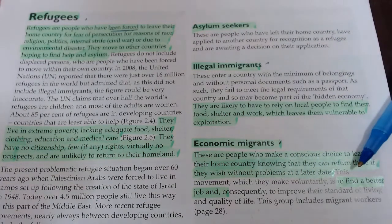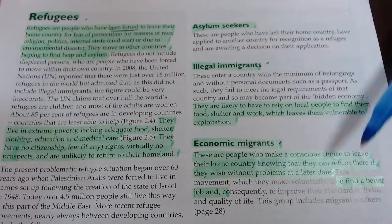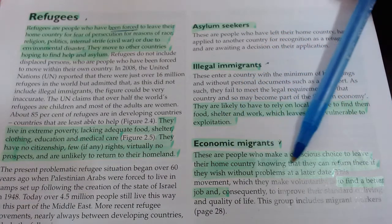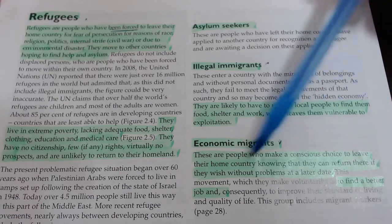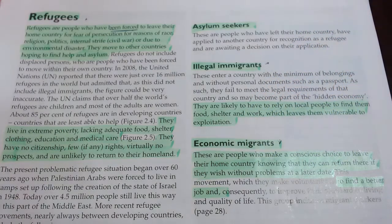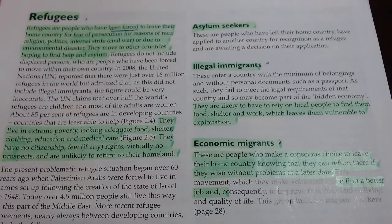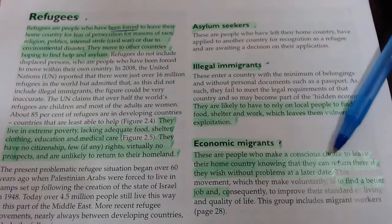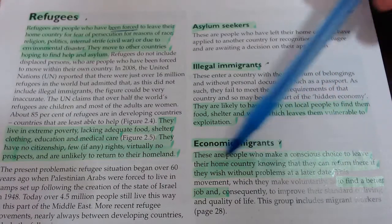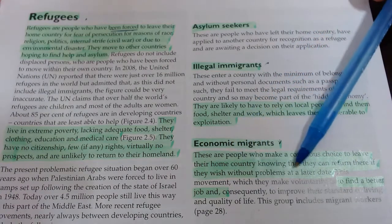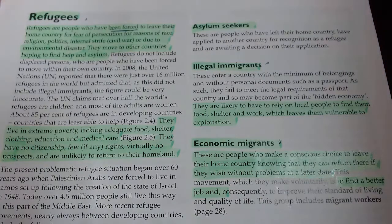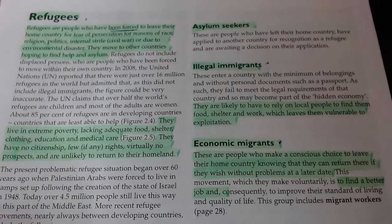Economic migrants we haven't touched on yet — and I am one of these. These are people who made a conscious choice to leave their home country, knowing they can return there if they wish without problems. I could fly to Ireland tomorrow if there were planes flying — I can always go home. This movement, which they take voluntarily, is usually to find a better job. In my case, I just moved for a change of lifestyle and climate.